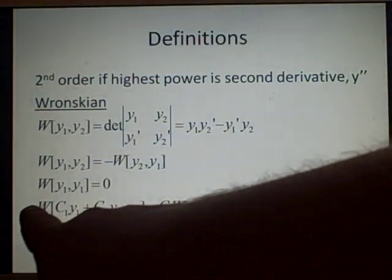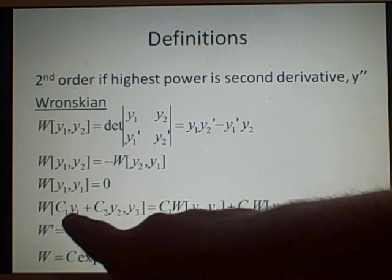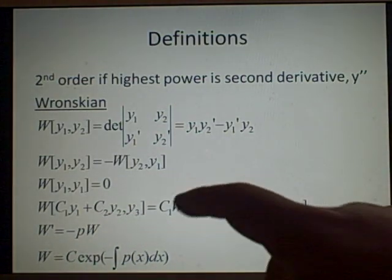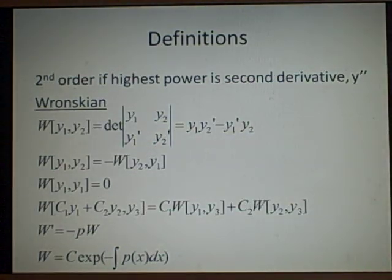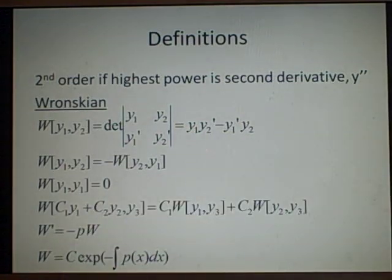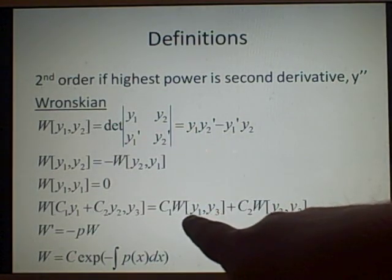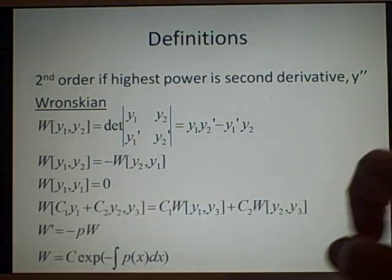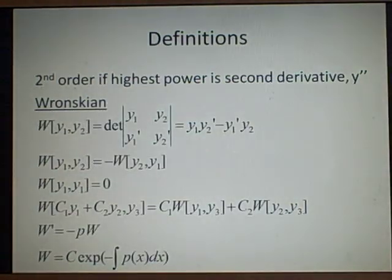Here, W of c1 y1 plus c2 y2 comma y3, you split it up similar to conditional expectation in probability. You move the c1s and c2, they're constants, you move them out, and you leave the y1 and the y2 and just add them.